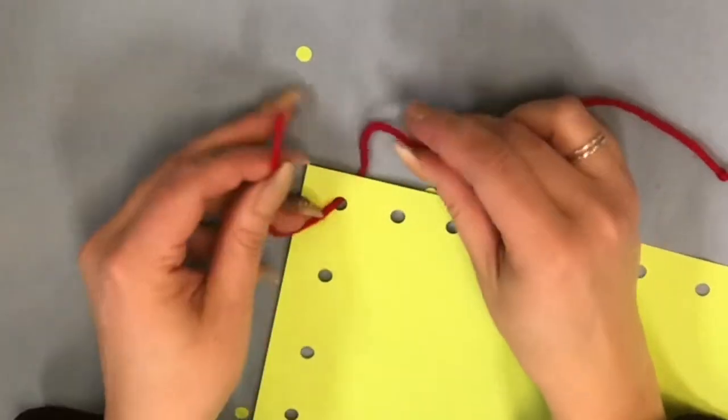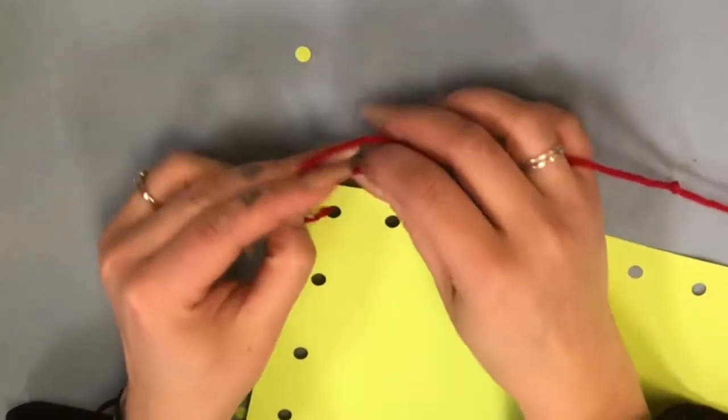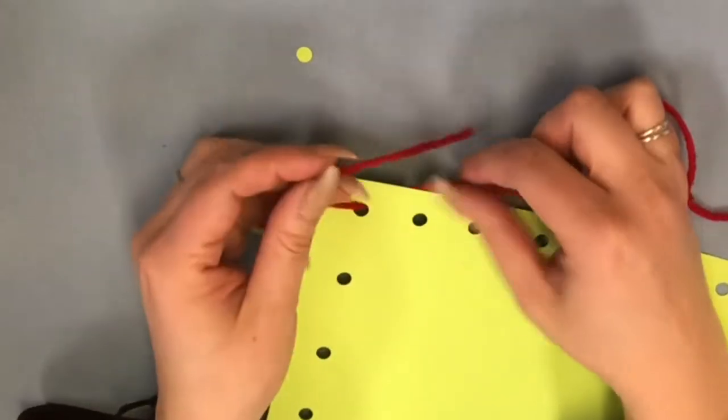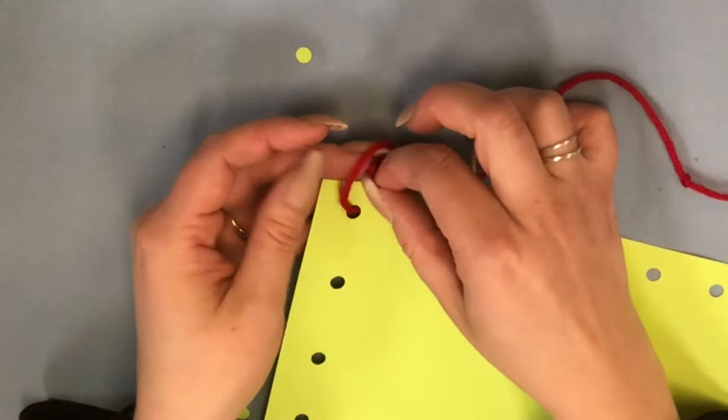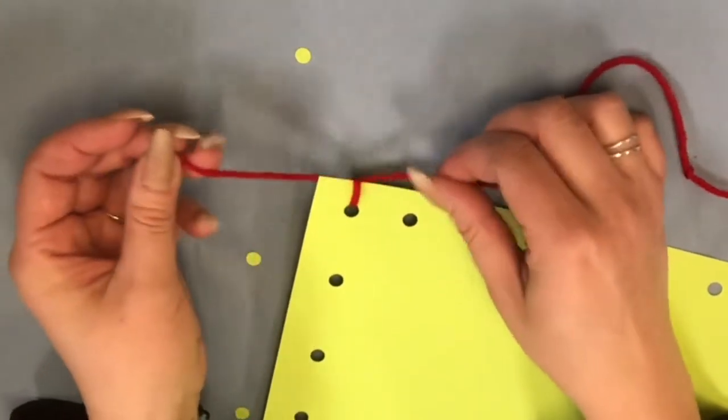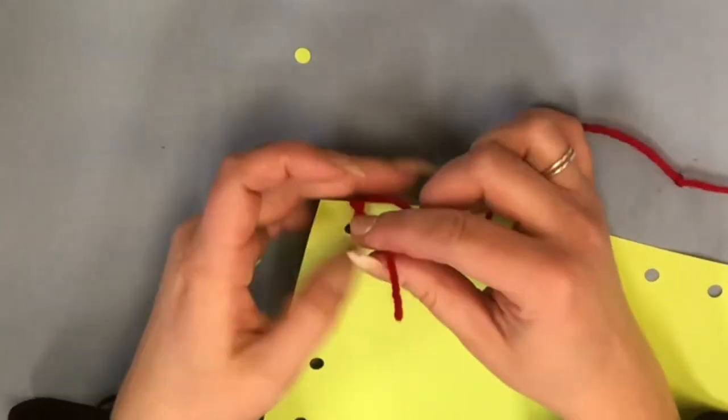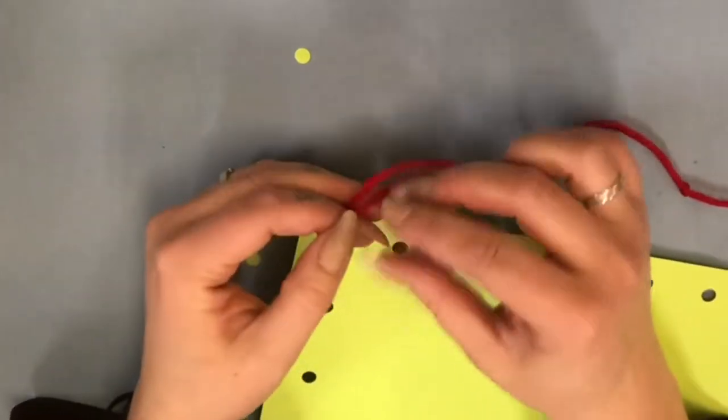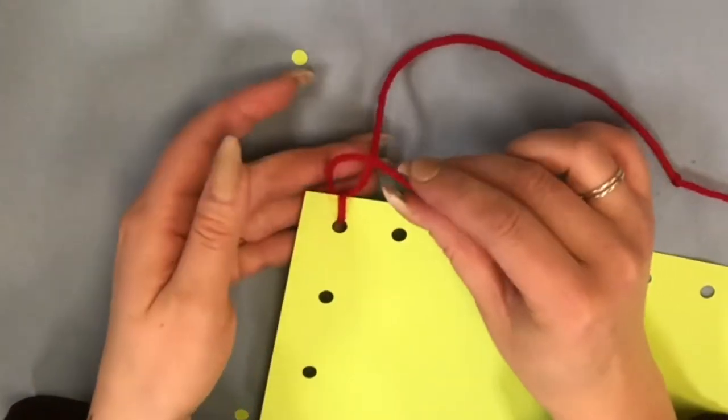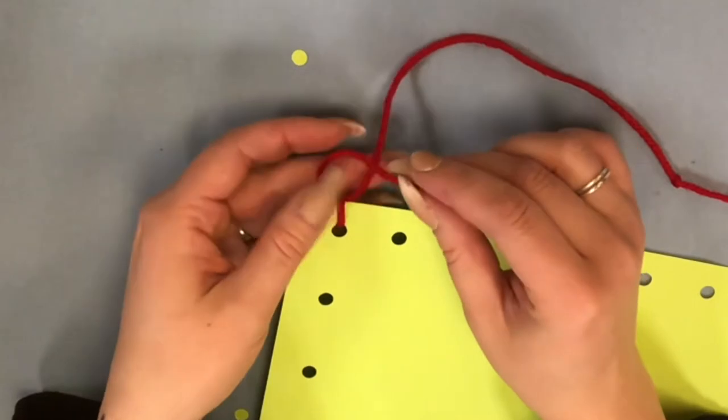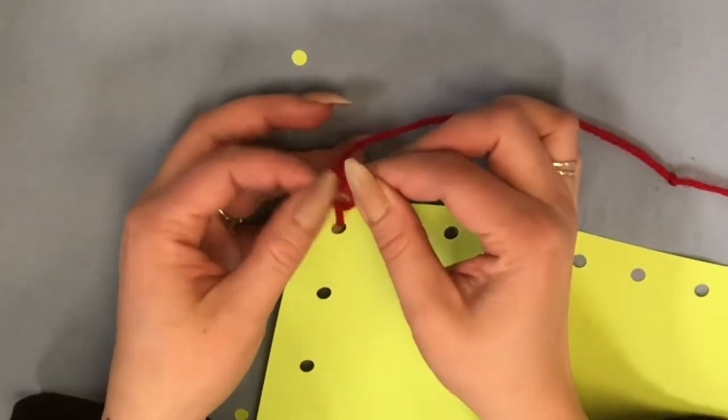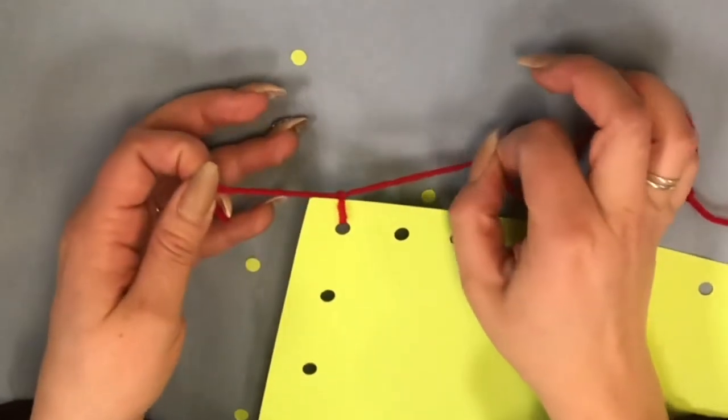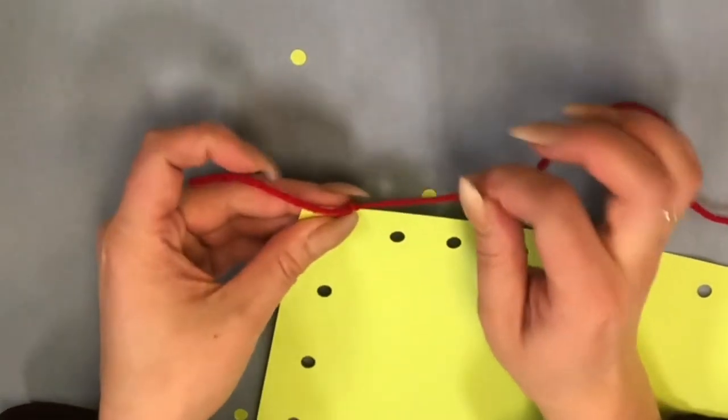Next you're going to tie this onto the paper. To tie it you're just going to make a loop. Put that tail under that loop and through and tie it up. Now we're going to want to make two knots so that it doesn't fall off. So you're going to do the same thing, make a loop, go under and through and pull it all the way. Now this isn't going to fall off.